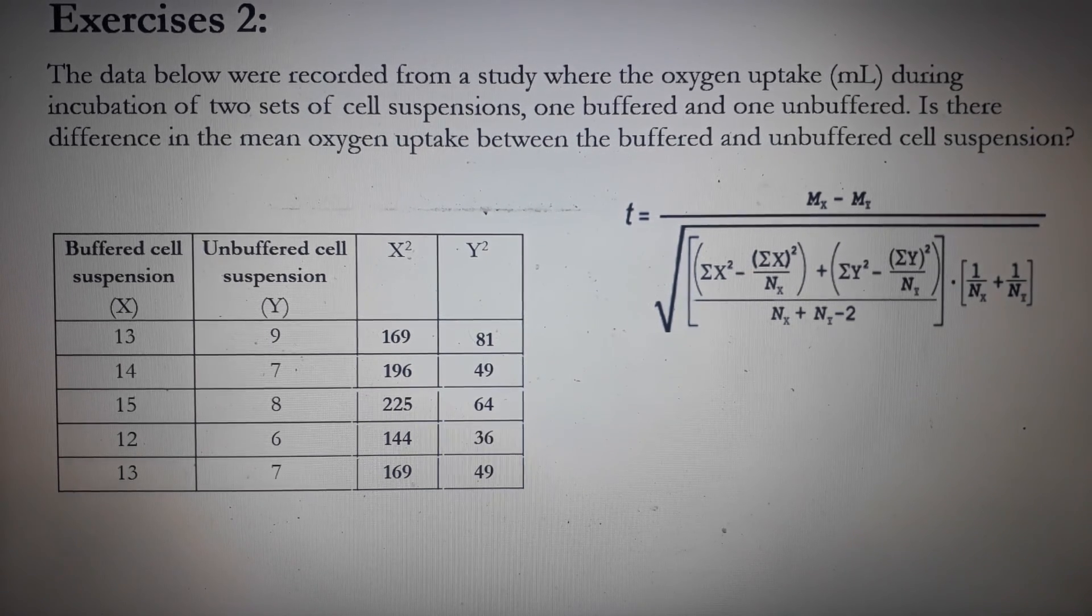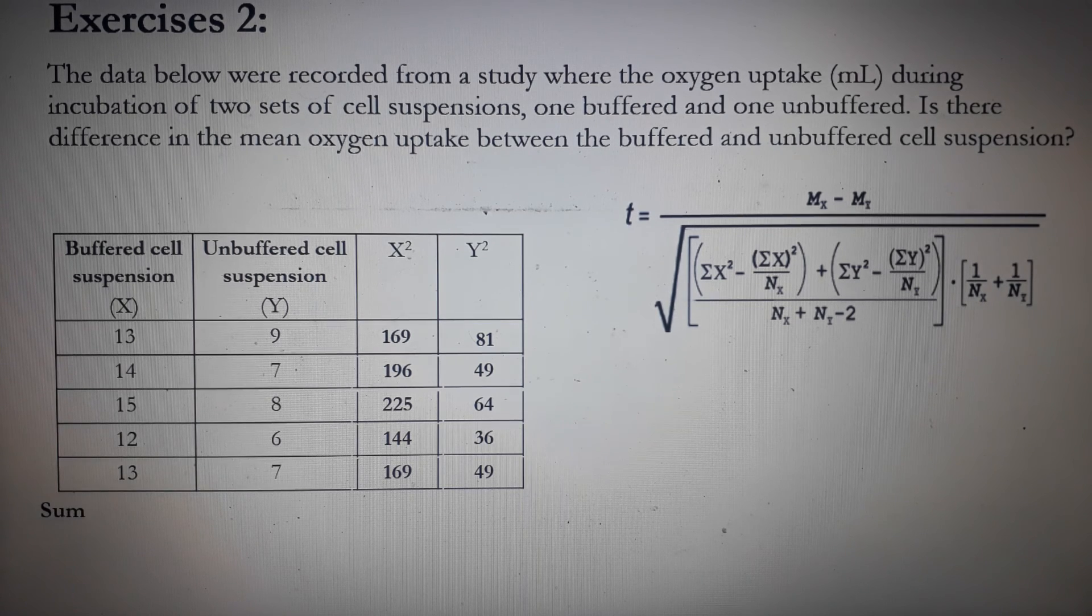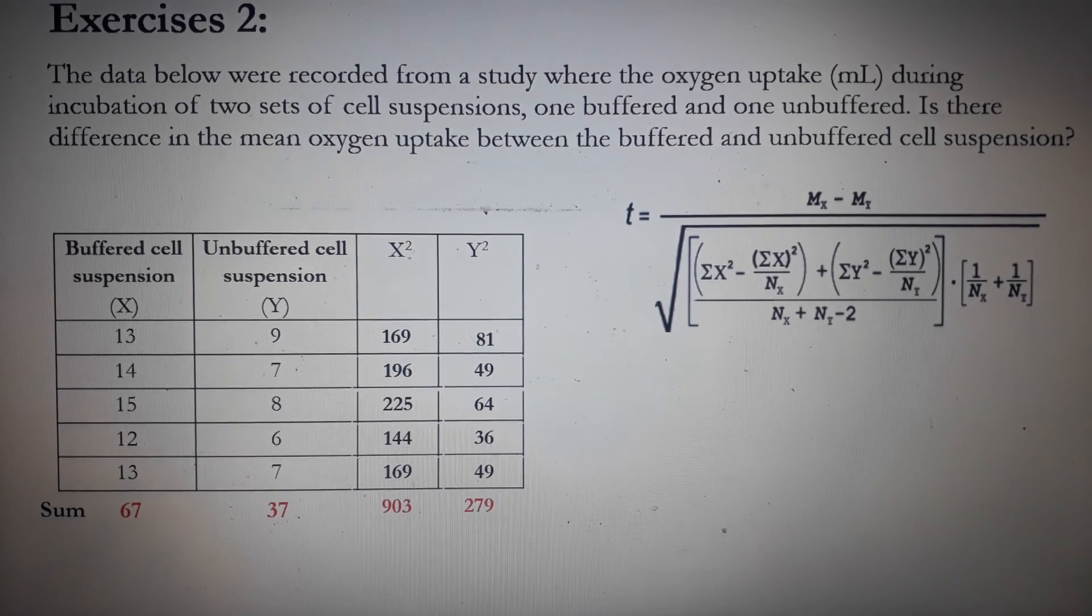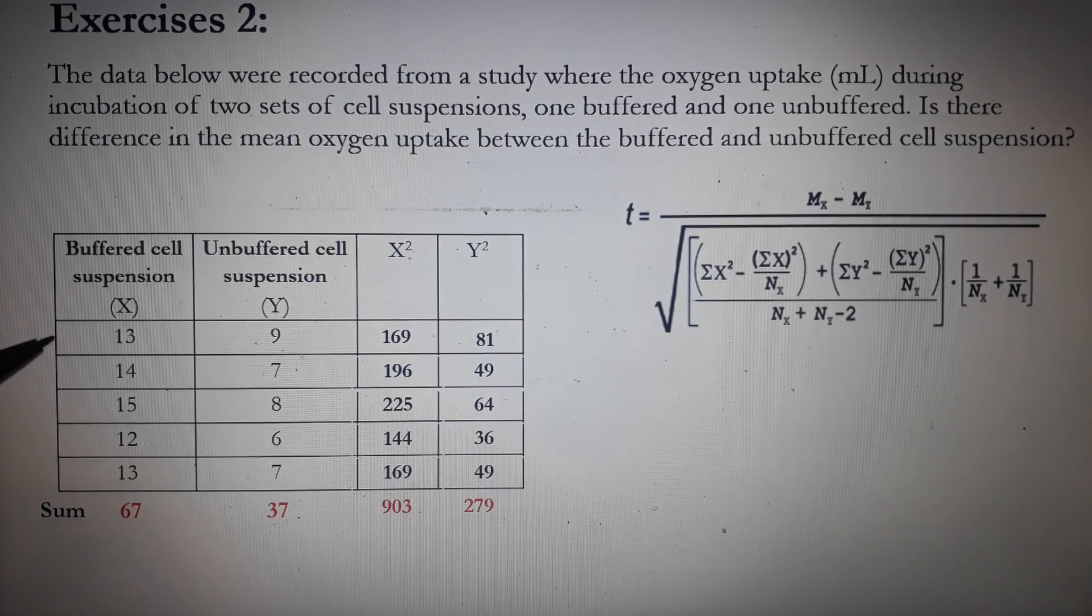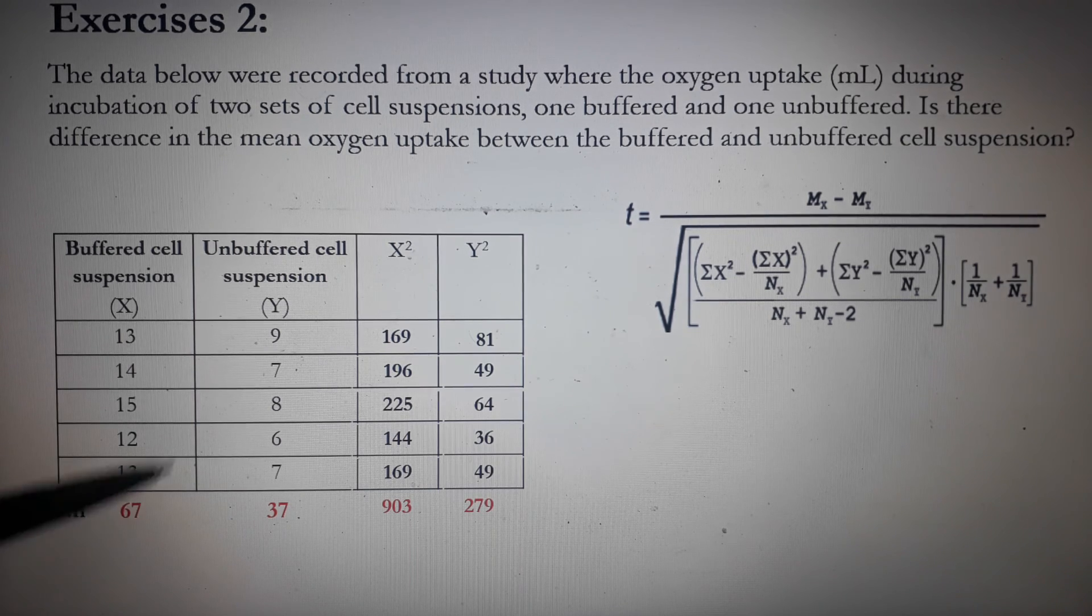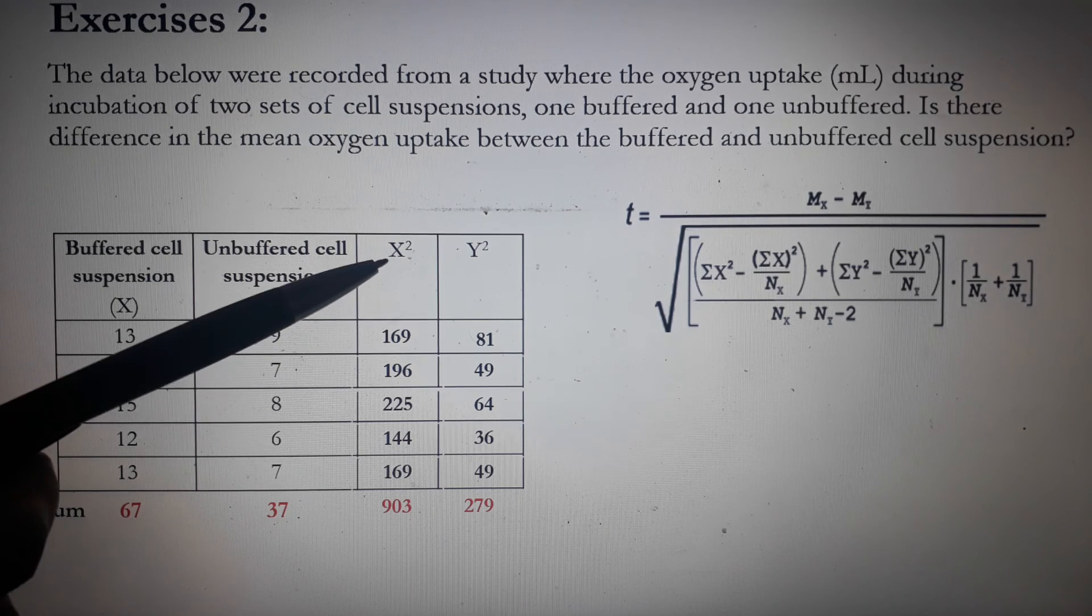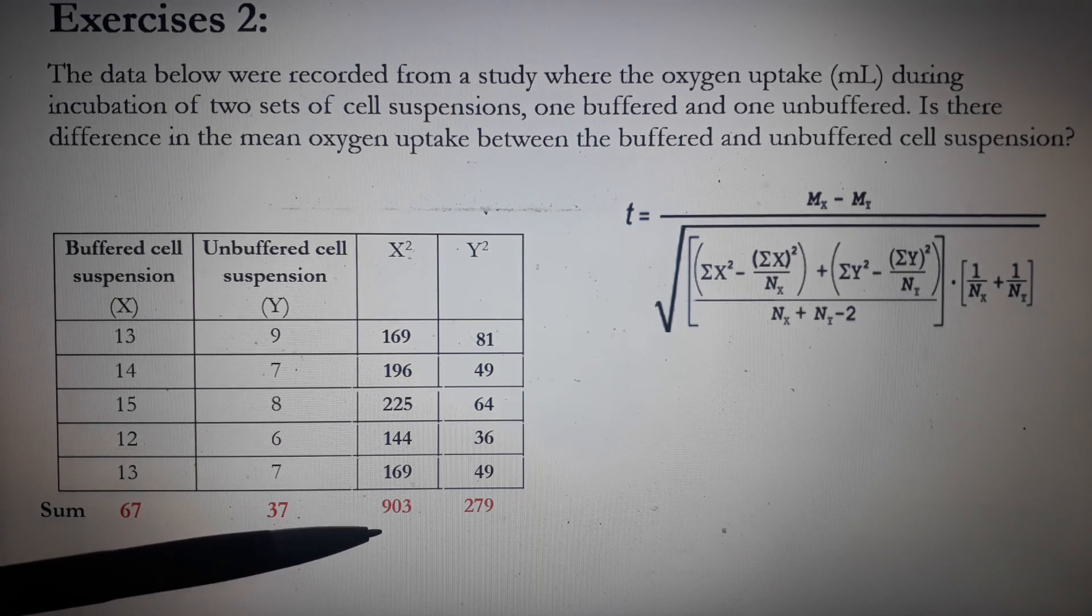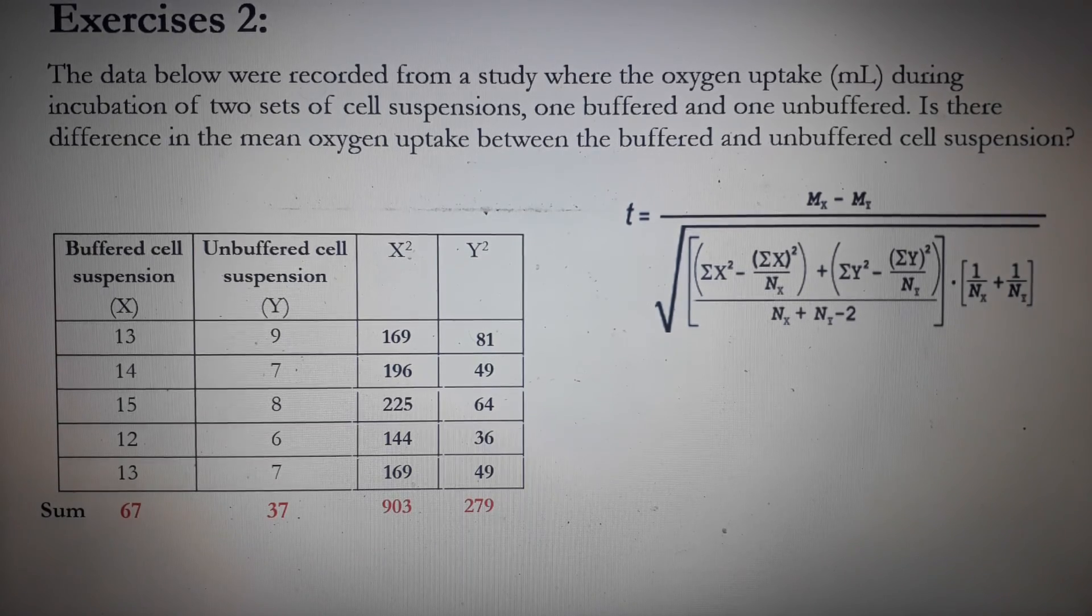Next, we need to get the summation or the sum of the values in each of the column. So the sum of the numbers in the x column is 67. On the y column, it's 37. On the x squared column, it's 903. And on the y squared column, it's 279.